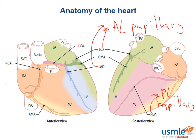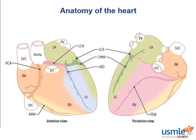Now what about the right coronary artery? It delivers blood into the right ventricle via some acute marginal branches, and in 85% of the population the RCA divides and gives rise to the posterior descending artery. In 8% of people the PDA arises from the left circumflex, and in the remaining 7% it comes as a contribution from both the circumflex as well as the right coronary artery.